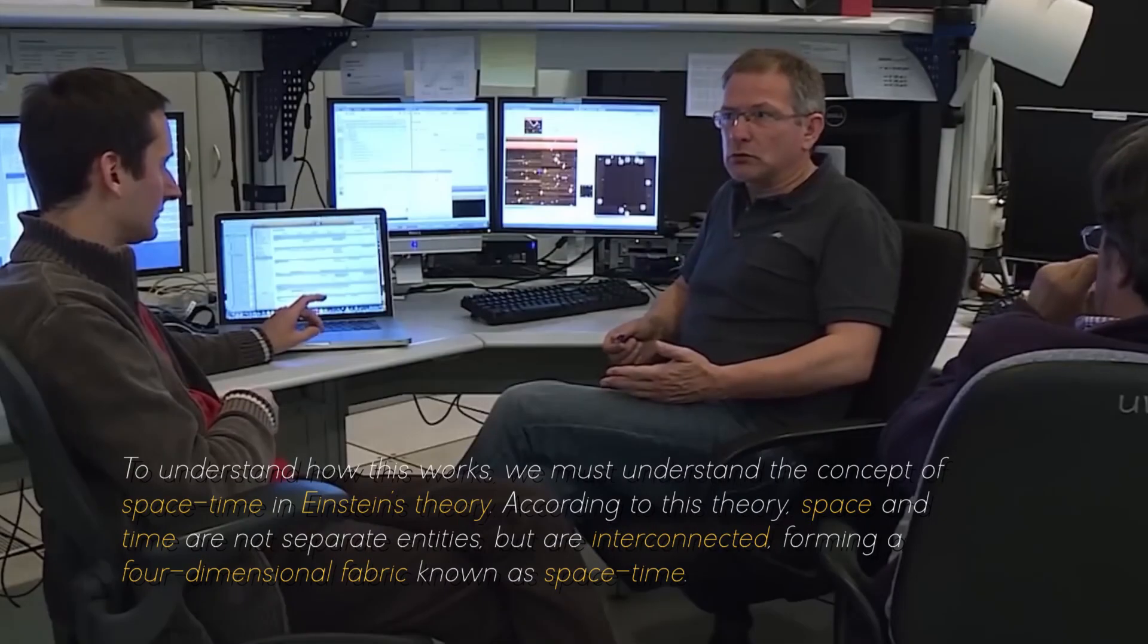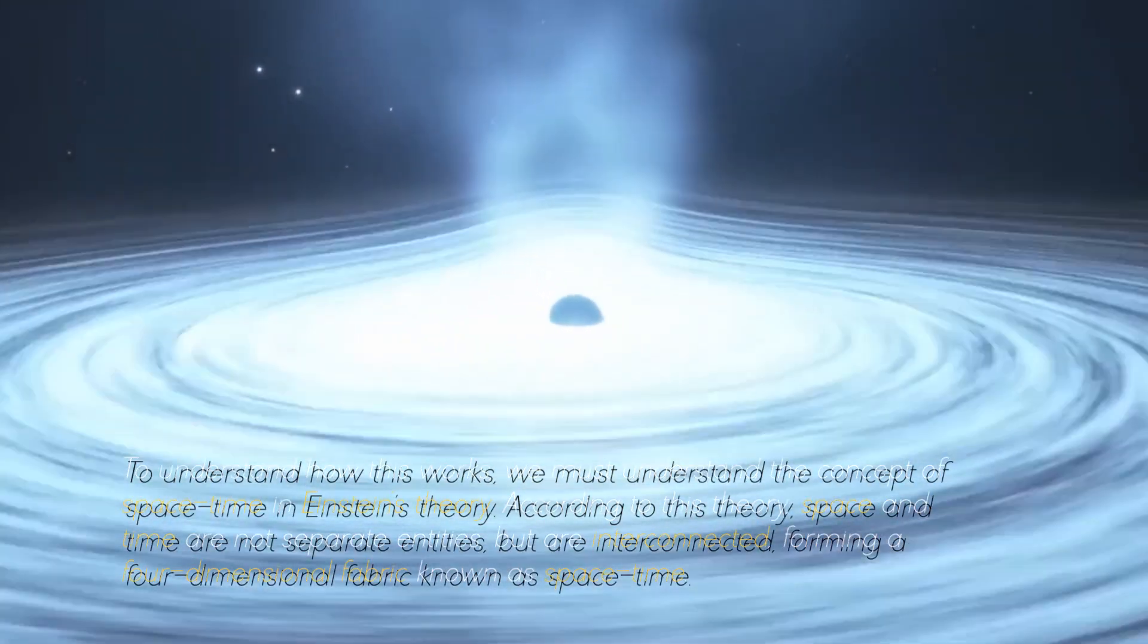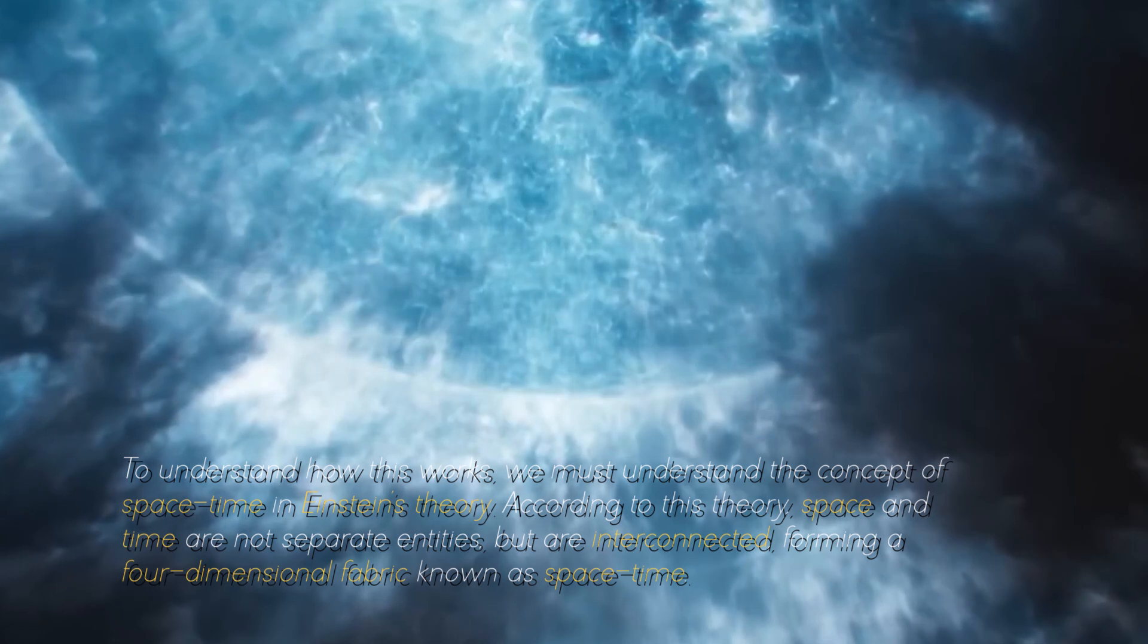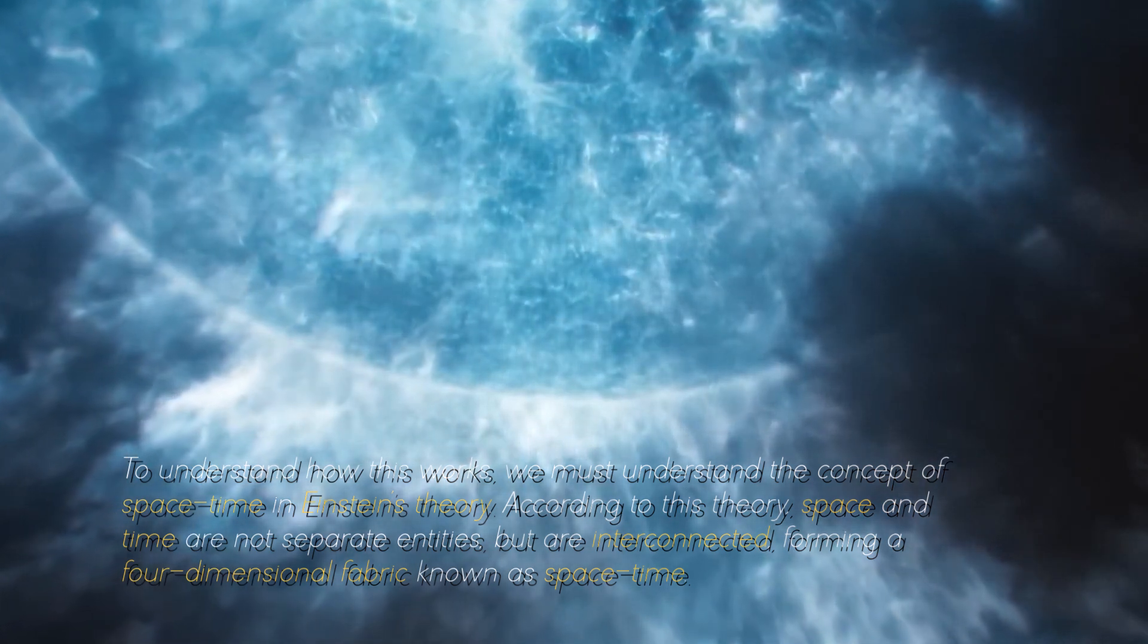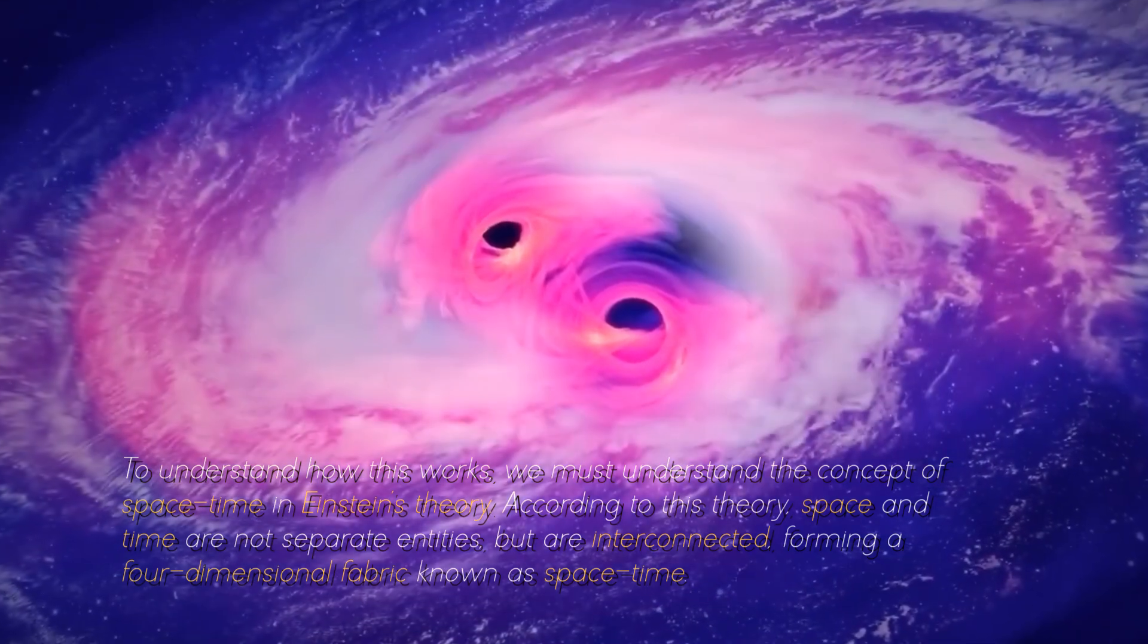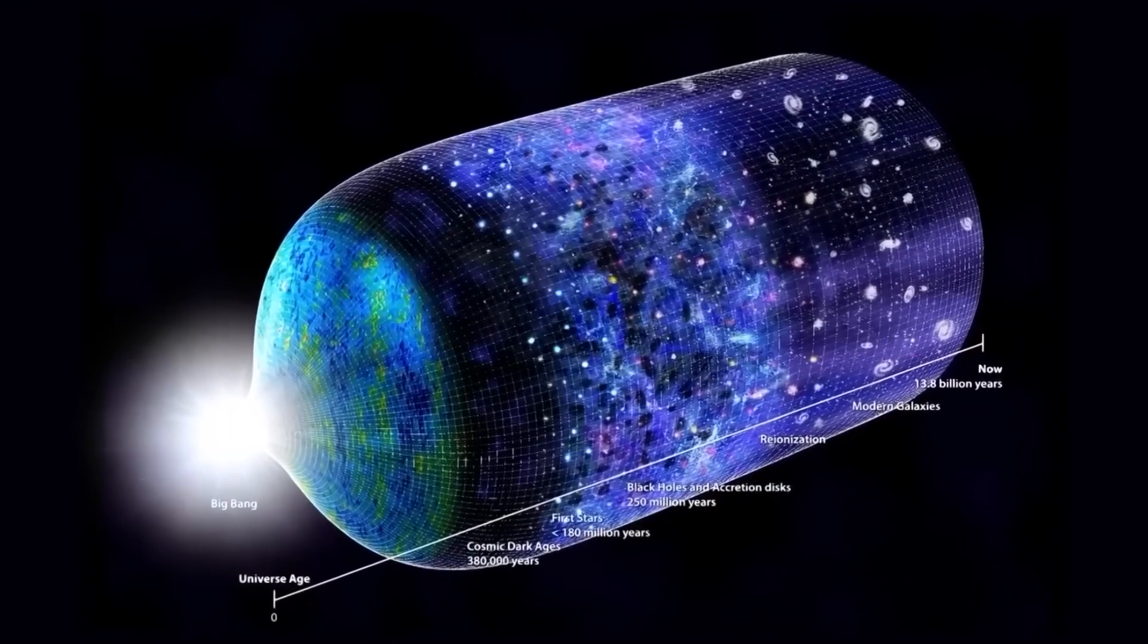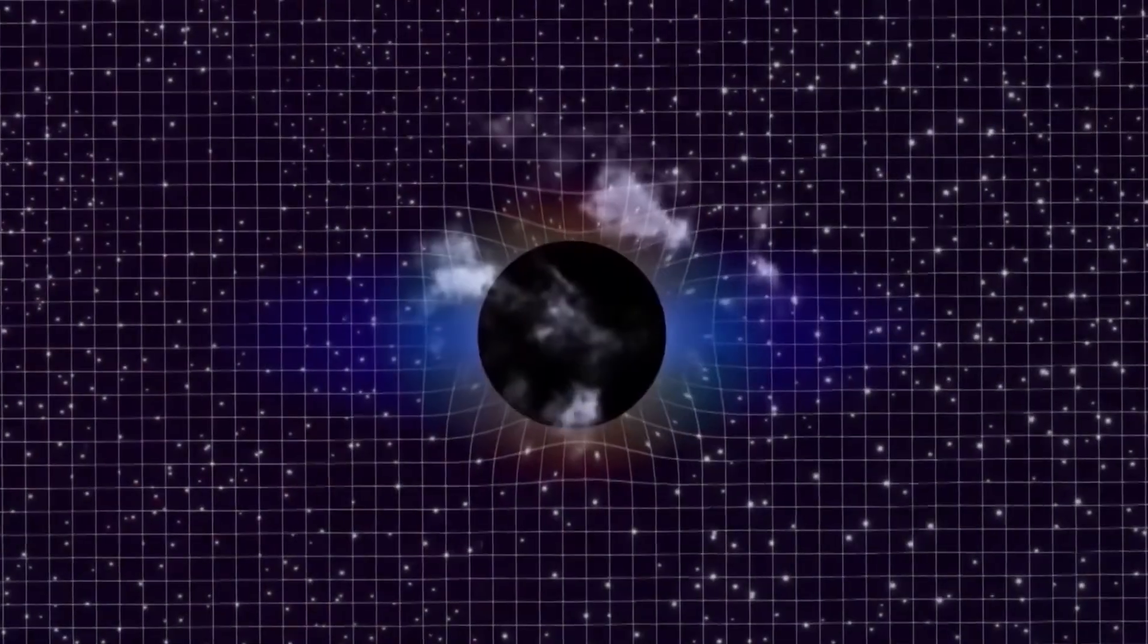To understand how this works, we must understand the concept of space-time in Einstein's theory. According to this theory, space and time are not separate entities but are connected, forming a four-dimensional fabric known as space-time. Objects with mass warp space-time, creating a gravitational field that affects the motion of other objects.